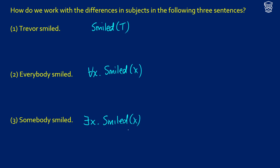We know what our final translations really should be because we can turn these into truth conditions. We can say: true if for all X in the domain of entities, X smiled. So how are we going to do this? What are we going to give to words like 'everybody' and 'somebody'?